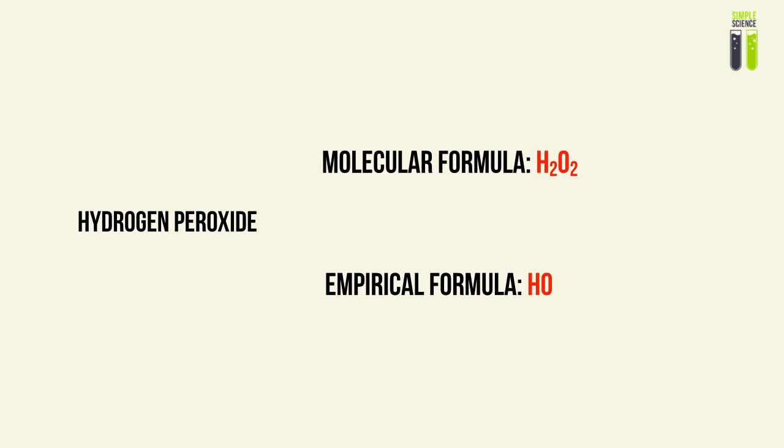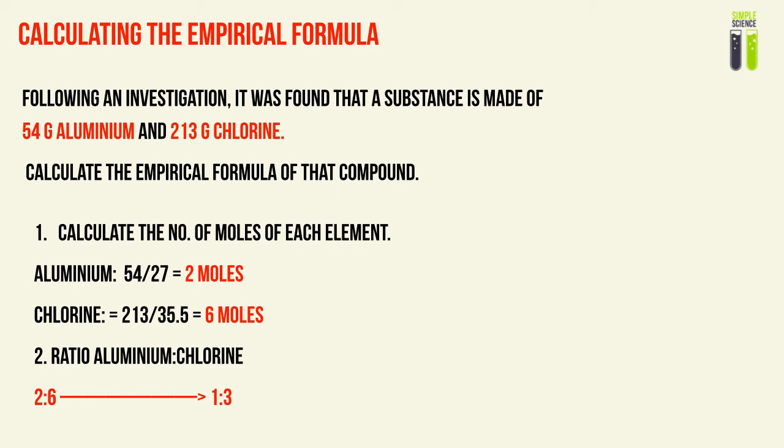So how do we calculate the empirical and molecular formulas? Let's look at how we calculate the empirical formula. I'm going to use it in a question context. Following an investigation, you will be given a substance and told what it's made of by mass. For example, a substance is made up of 54 grams of aluminium and 213 grams of chlorine, and you're asked to find the empirical formula — the simple molar ratio between the atoms inside that compound.